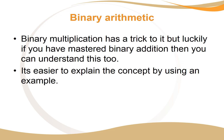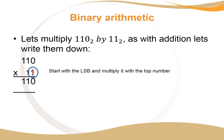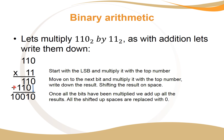Binary multiplication has a trick to it, but if you can do binary addition, you can understand this too. Let's multiply 110 by 11 in binary. We take the least significant bit of the multiplier and multiply it by the top number — writing down 110 — then move to the second bit, do the same, but shift the result up one position, leaving that space blank.